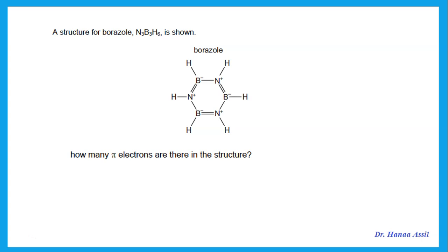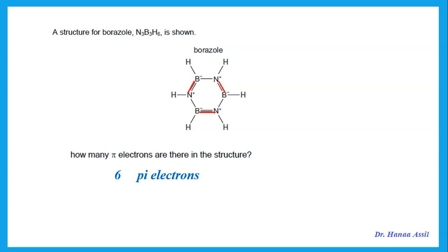We have a structure with three double bonds and are asked how many pi electrons are present. Remember that a pi bond is made up of two electrons. Each double bond has one pi bond made up of two pi electrons. So with three double bonds, that is two times three — a total of six pi electrons.